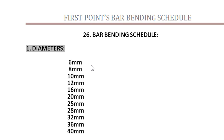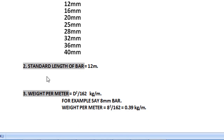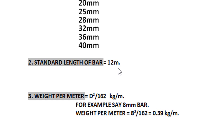Let us start with the first topic of bar bending schedule by understanding the diameters of reinforcement. Reinforcement bars are circular in shape, so we deal with diameters. We have 6mm, 8mm, 10mm, 12mm, 16mm, 20mm, and so on. You can order whatever diameter you need, such as 40mm or 45mm.